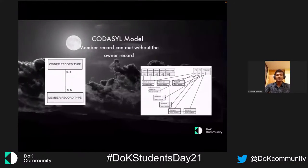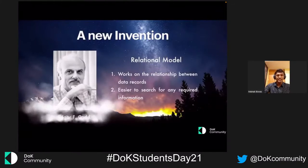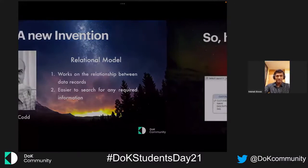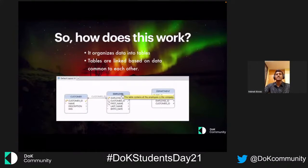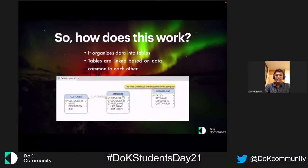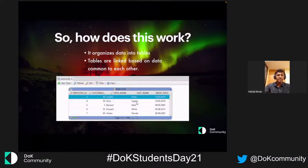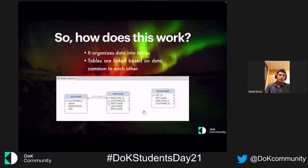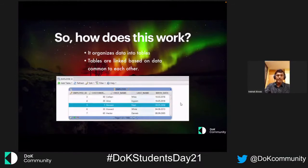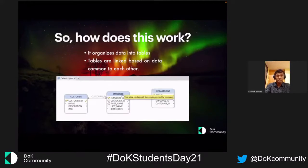We needed a new kind of method, and for that a new invention was done by this gentleman — Edgar Codd. Edgar Codd devised the relational model of databases. In a relational database, data is organized in tables — every table is for a specific entity, like customer, employee, or department. Each table has columns representing attributes, such as employee ID, first name, and last name, and data is stored in rows. All these tables are linked to each other by data common to each other. This made storing and searching data far more efficient than previous models.